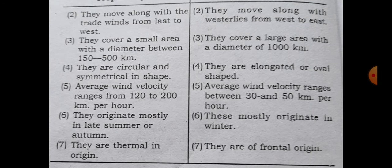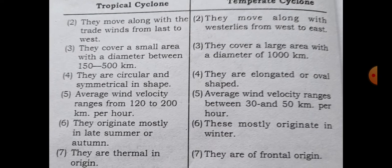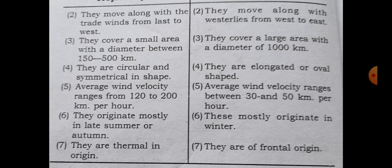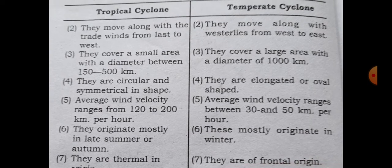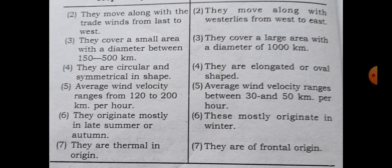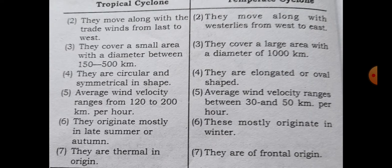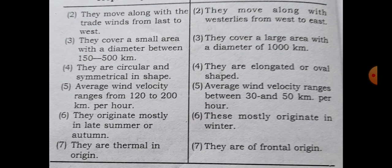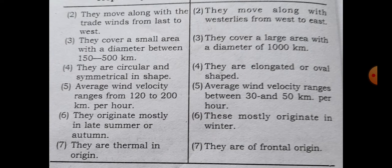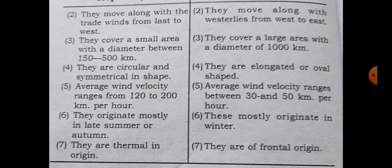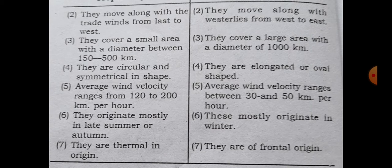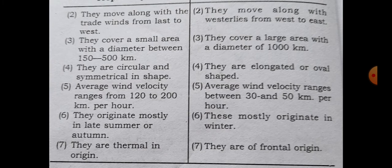Number three: tropical cyclones cover a small area with a diameter of 150 to 500 kilometers, whereas temperate cyclones cover a large area with a diameter of 1,000 kilometers. Tropical cyclones are circular and systematic in shape, but temperate cyclones are elongated or oval shaped. Average wind velocity ranges from 120 to 200 kilometers per hour in tropics, but in temperate the average wind velocity ranges between 30 and 50 kilometers per hour. Tropical cyclones originate mostly in late summer or autumn, whereas temperate cyclones mostly originate in winters.